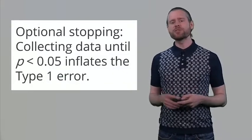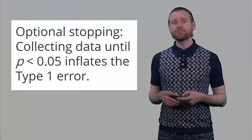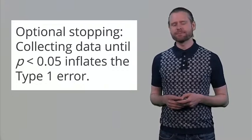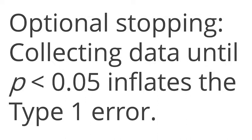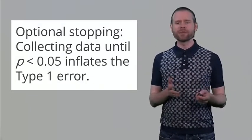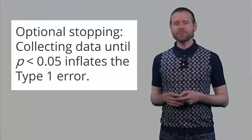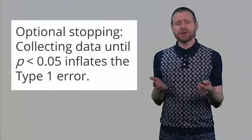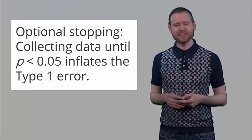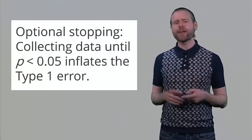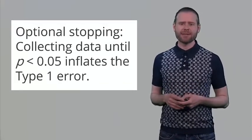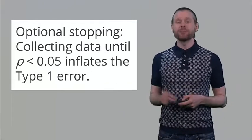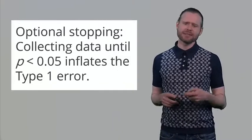Another widely used problematic research practice is optional stopping. You collect data, analyze it, do a statistical test, and check if p < 0.05. If not, you collect more participants and repeat. This is common practice in many research areas and sounds efficient — if data are already significant, why continue? Regrettably, without controlling error rates, this inflates the Type 1 error rate. You can do optional stopping, but you must do it the right way by controlling Type 1 error rates.